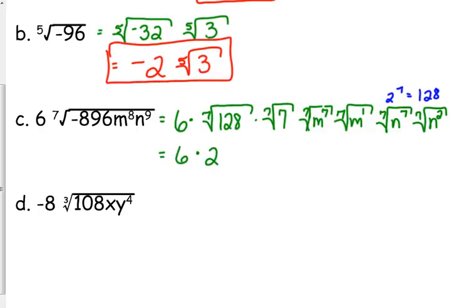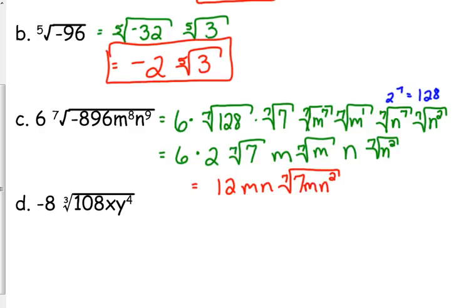The seventh root of 128 is 2. Can't do anything with the seventh root of 7. The seventh root of m to the seventh is m. We've got to leave that other one under the radical, and we don't write the first power. The seventh root of n to the seventh is n, and we've got to leave the n squared under the other one. So final answer, we've got 6 times 2 is 12. We've got 1 m and 1 n outside of the radical, and we have a 7 and an m and an n squared left under the radical. Because it was n to the ninth. So since it was the seventh root, we split it into n to the seventh times n to the second, because you add the exponents when you're multiplying.